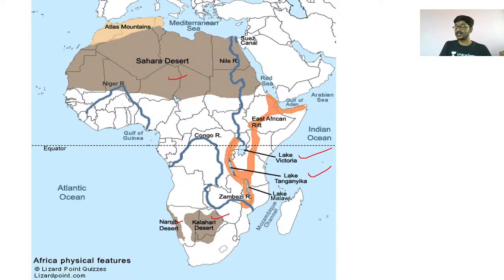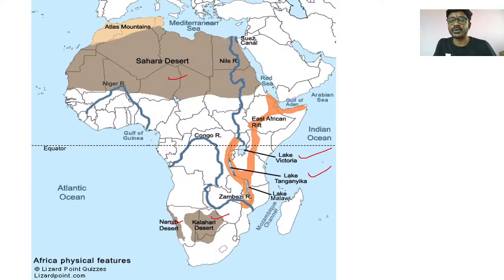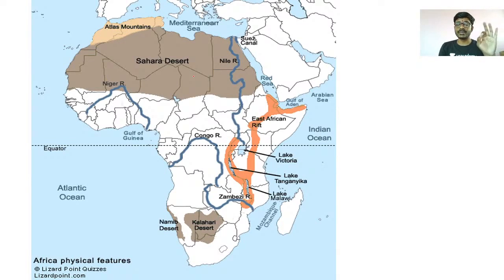The Mozambique Channel is between Madagascar and Mainland Africa. Lake Tanganyika, Lake Victoria, then Kalahari Desert, Namib Desert, and Sahara Desert — these are the important deserts. Niger River, Congo River, Sahara Desert, Kalahari Desert, Namib Desert, Nile River, Lake Tanganyika, Lake Victoria, East African Rift Valley.